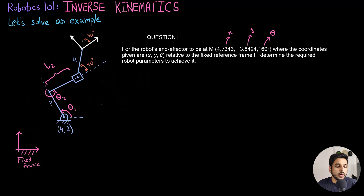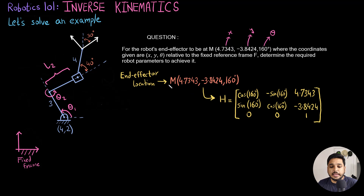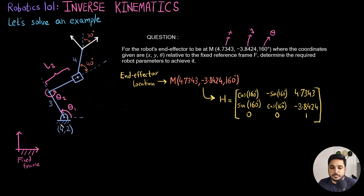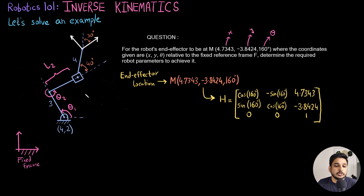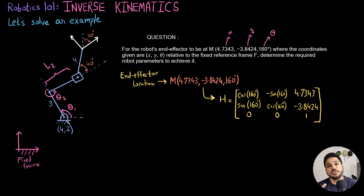What I can do is write this in homogeneous form, which has a rotation matrix with the angle as 160 degrees, and this is my x and this is my y. Now the way to do this problem — since it is an inverse kinematics problem — is to first do the forward kinematics by considering all the homogeneous transforms that take the fixed frame to the robot's end effector frame.